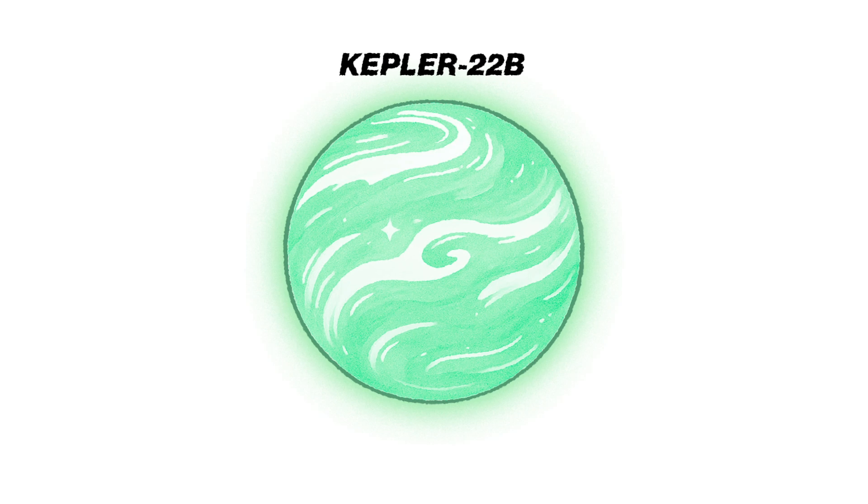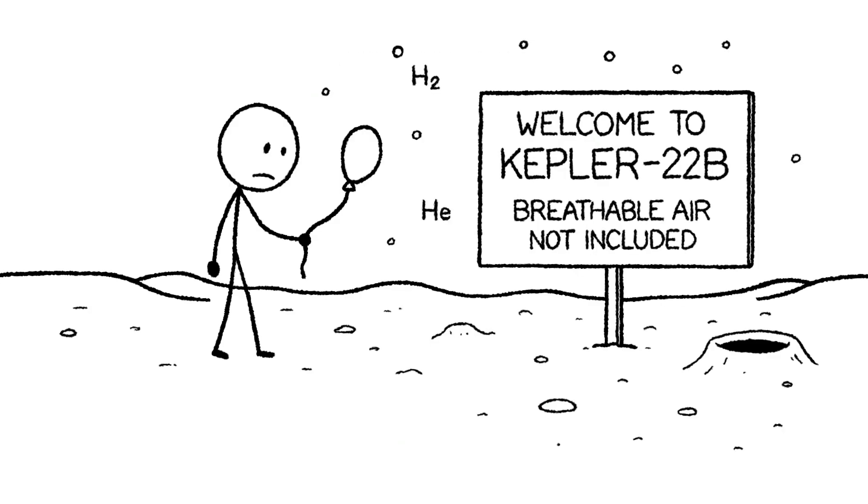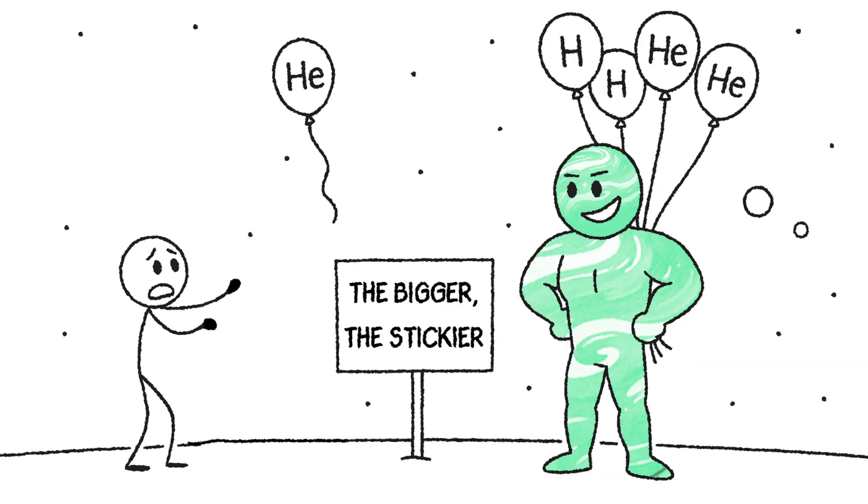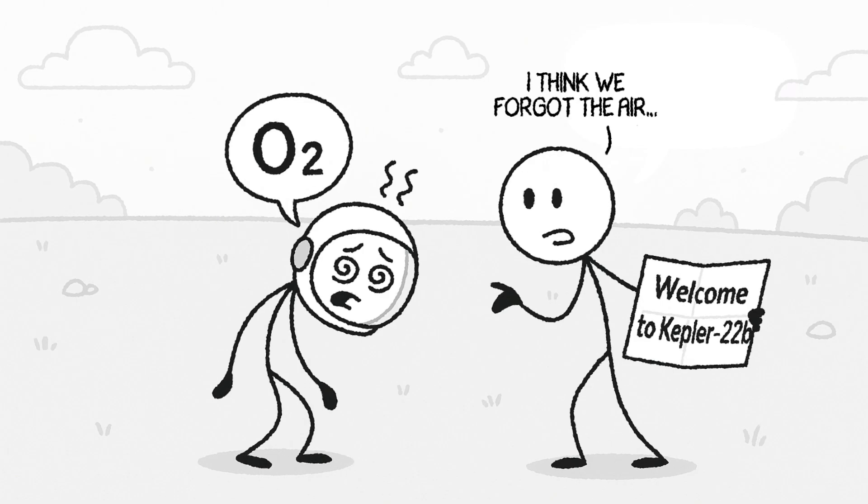All right, back to Kepler-22b. Let's talk about air, or the lack of anything you'd actually want to inhale. Kepler-22b's atmosphere, if it exists, likely contains light gases like hydrogen and helium, which are common on larger planets due to their stronger gravity holding onto these elements. But here's the issue: oxygen, the stuff you need to not die, is probably in very short supply or missing altogether. So unless you're into asphyxiation-themed vacations, you'll need some serious breathing gear just to stay conscious.